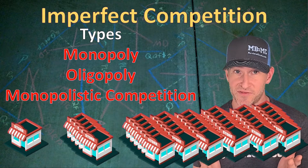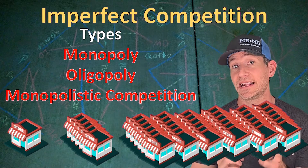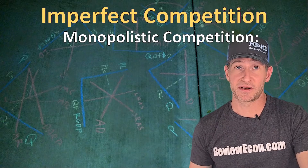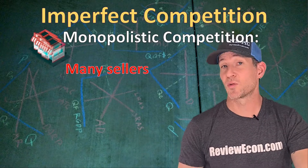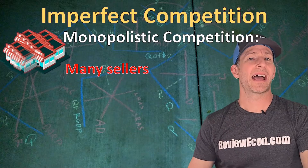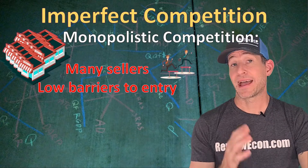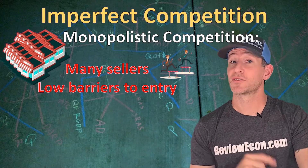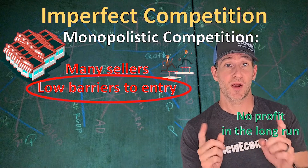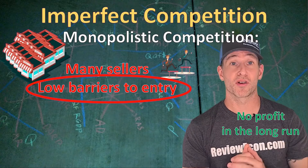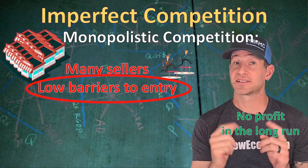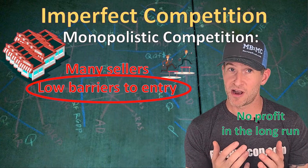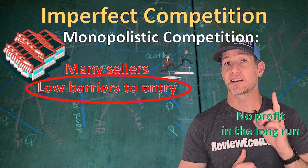Since this video is an introduction to imperfect competition, we're going to talk about each of these three imperfectly competitive markets briefly. First, monopolistic competition. Here we have many sellers within this market. We also have low barriers to entry, which means it is relatively easy to enter or exit this market. And it is because of those low barriers to entry that firms within this market structure are going to earn zero economic profit in the long run. Because when there's economic profit, firms are going to enter the market and compete that profit away.